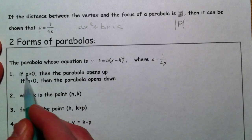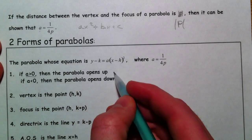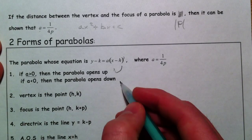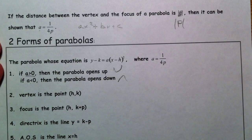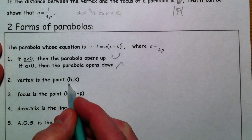So again, reminder, if a is positive, it opens up. If a is negative, the parabola opens down.